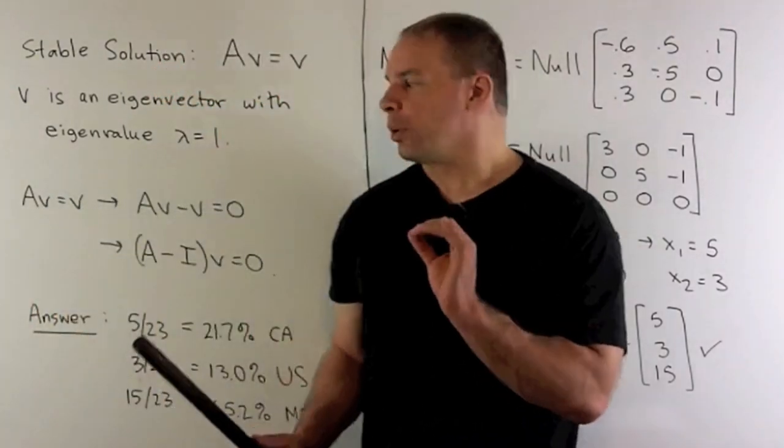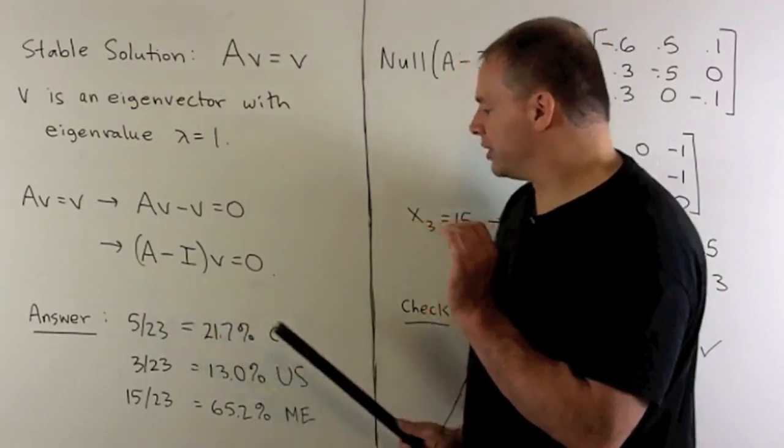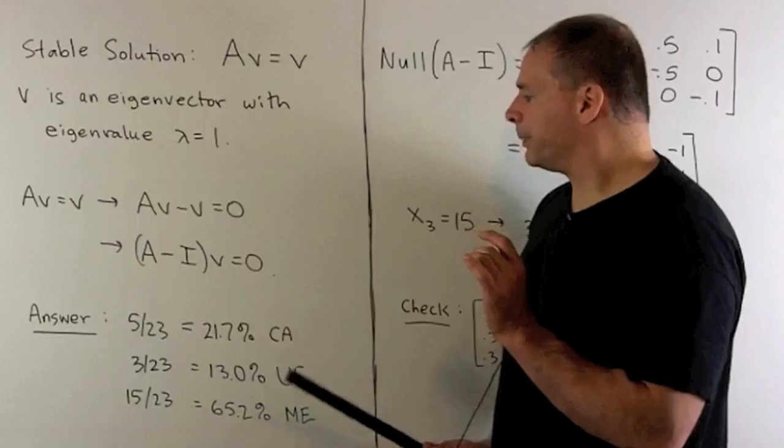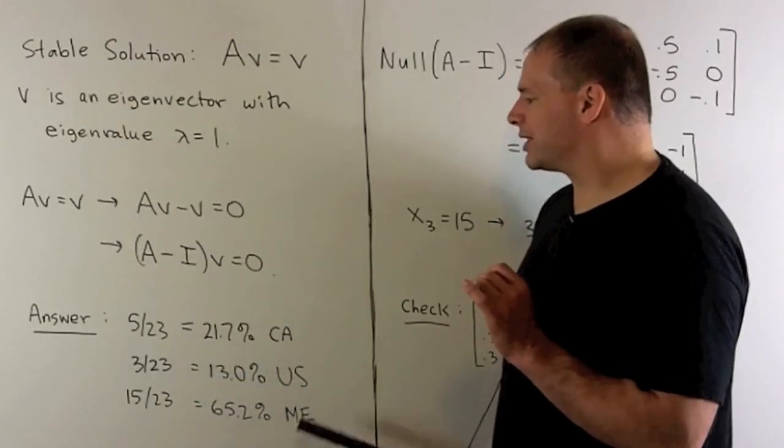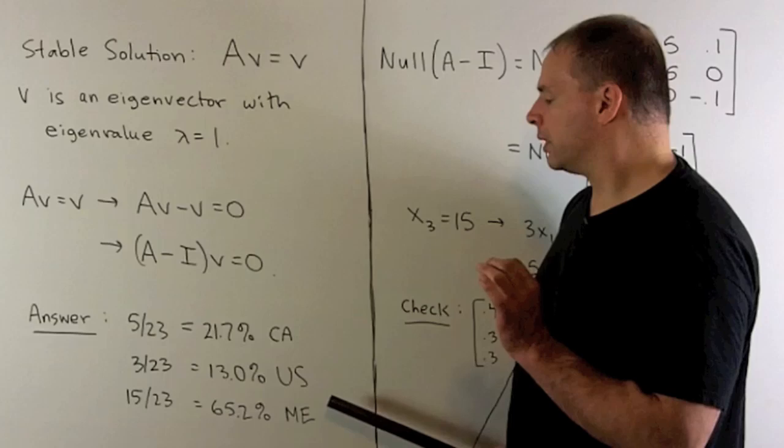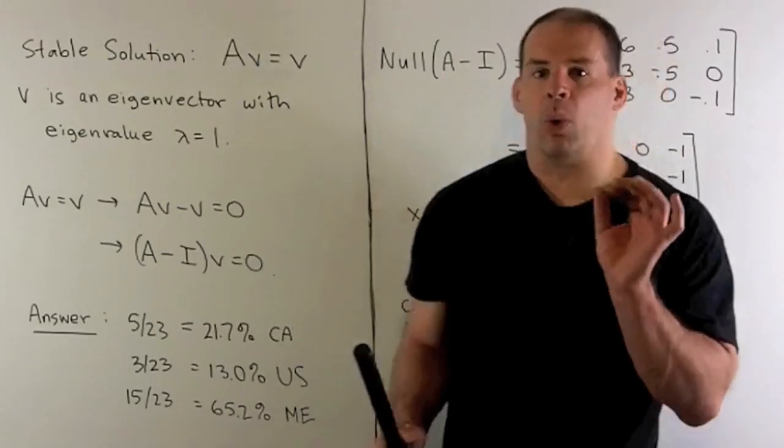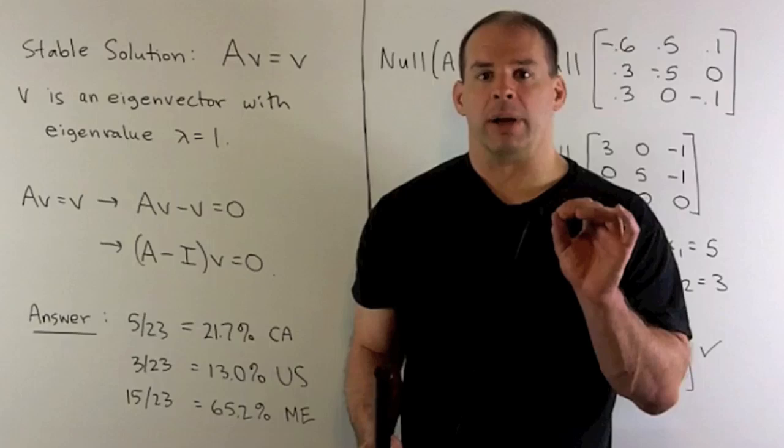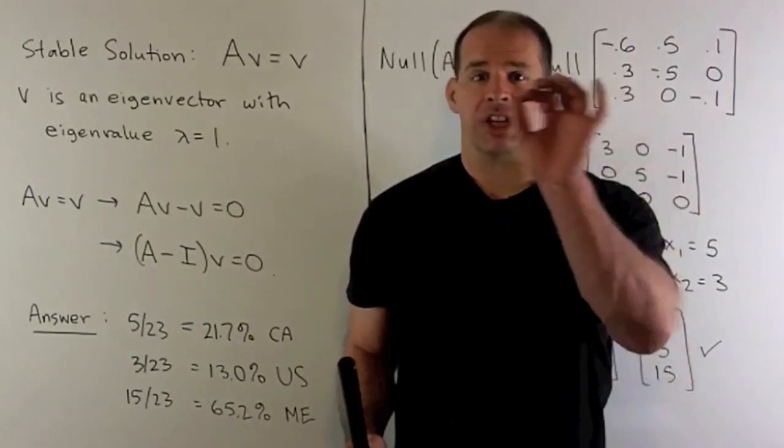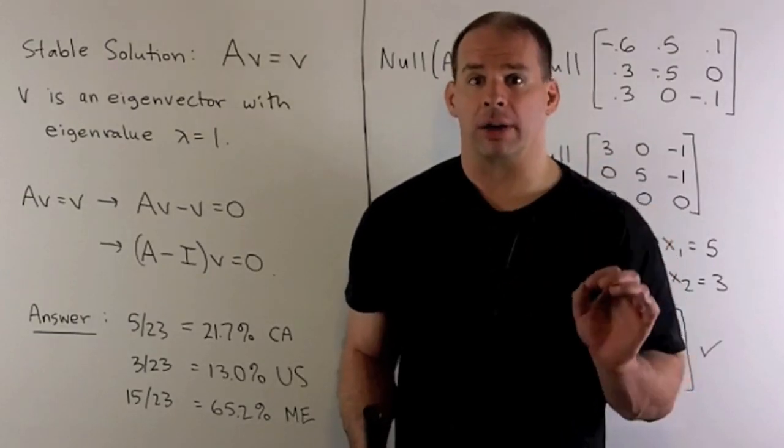I don't have to refer to the population total, so we give our answers as fractions. Our answer will be, if we want to assign a fraction to each country, we'll have 5/23rds going to Canada, 3/23rds going to the US, 15/23rds going to Mexico. These population percentages are going to be the ones such that we have equilibrium. If we let a year go by, the population count is not going to change, although the populations are going to move around.